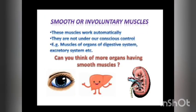The second type of muscle is the smooth or involuntary muscles. These muscles work automatically — they are not under our conscious control. Examples include the organs of the digestive system, excretory system, and all the internal organs. Can you think of more organs having smooth muscles? If yes, write them in your notebook.